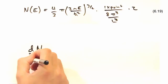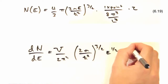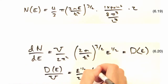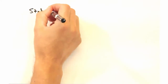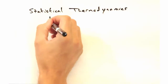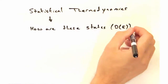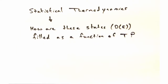And after taking the derivative, we get our density of states normalized to sample volume. So now that we have our density of states, we should look to statistics to see how these states are filled as a function of temperature.